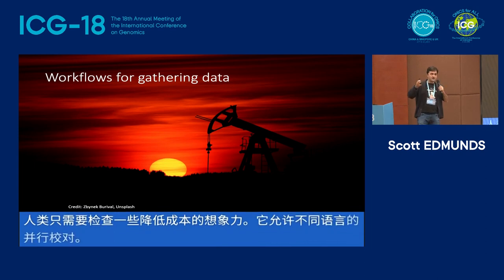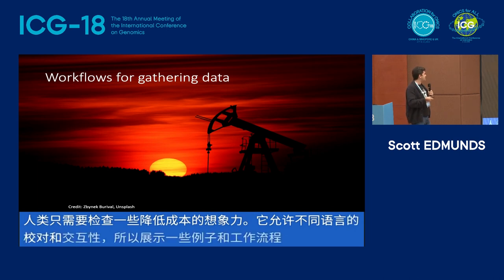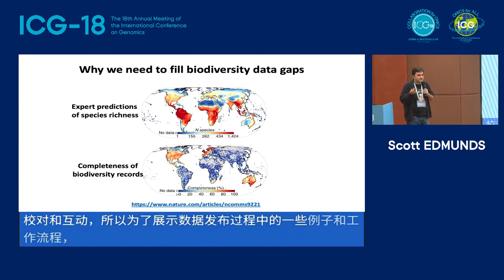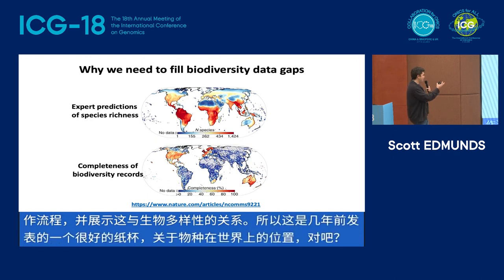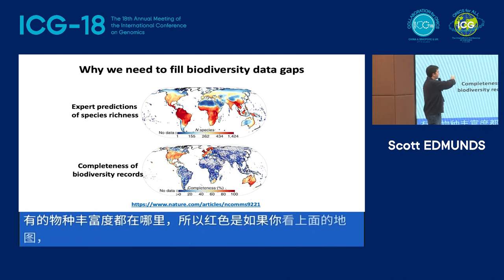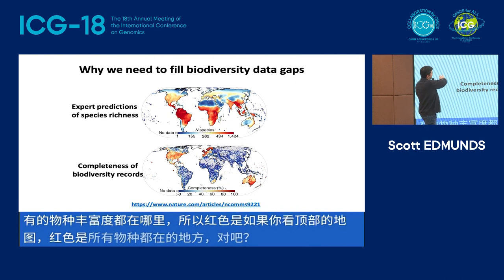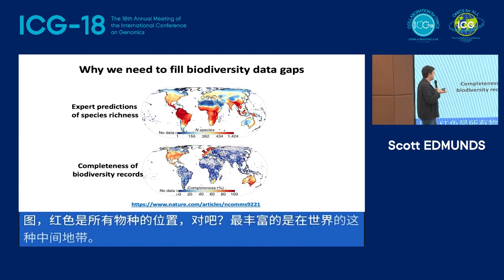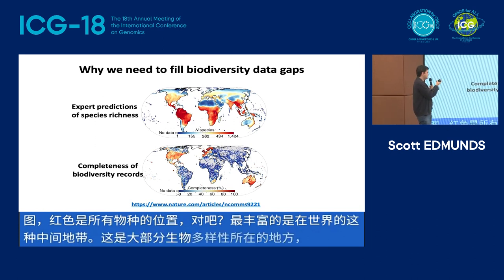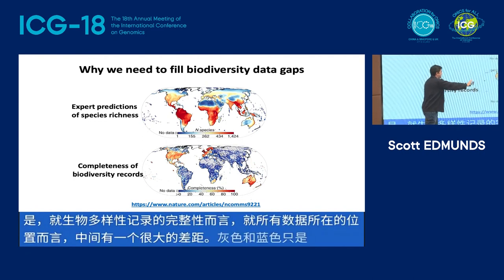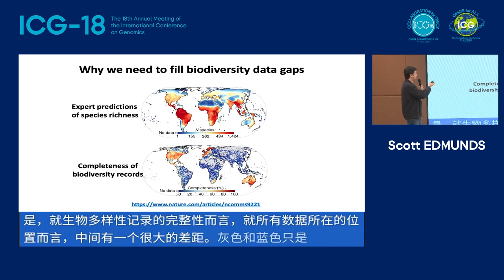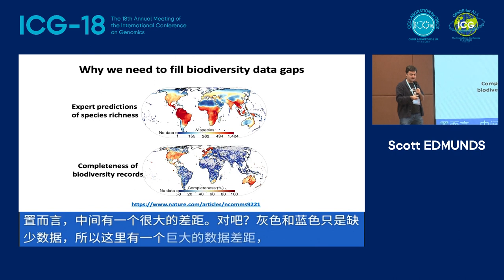To show some examples in the data publishing and collecting process and how this is relevant to biodiversity: a great paper published a couple of years ago showed where species richness is in the world. If you look at the top map, red indicates where all the species are — the most richness is in the middle zone of the world. But unfortunately, in terms of completeness of biodiversity records, there's just a big gap in the middle — gray and blue is just missing data. The most diverse places have proportionally the least data, and we need to tackle this gap.